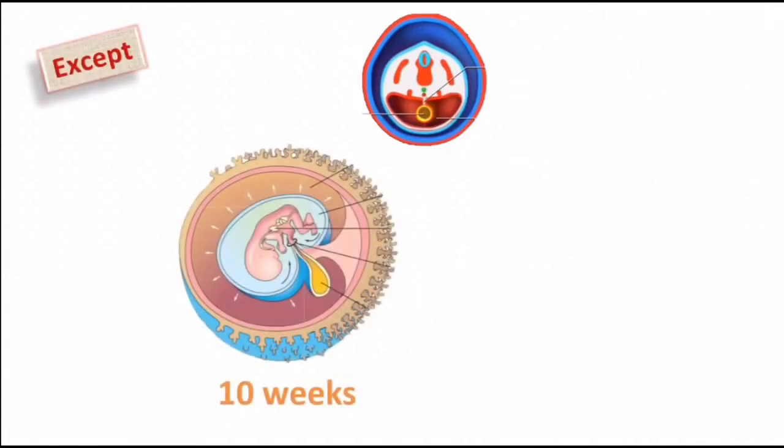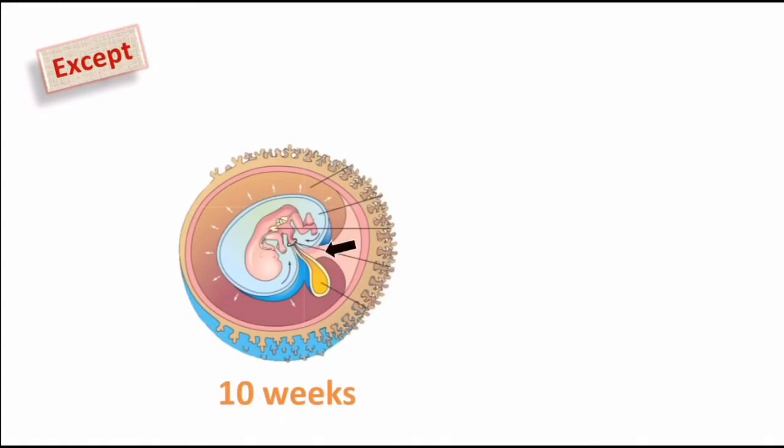The two lateral folds fuse in the midline to form the ventral body wall, except at one area. This is a fetus of 10 weeks. The structure shown by the arrow is the connecting stalk — the lateral fold will not fuse at this area. The next arrow shows the yolk sac, which maintains communication with the gut by a duct known as the omphalo-enteric duct.